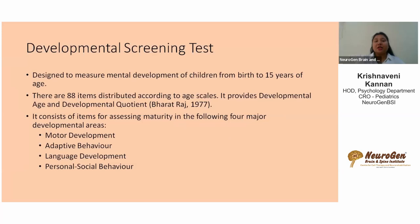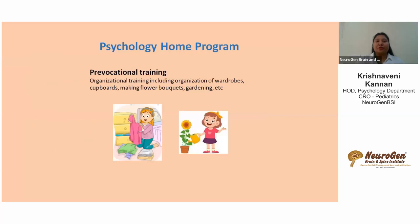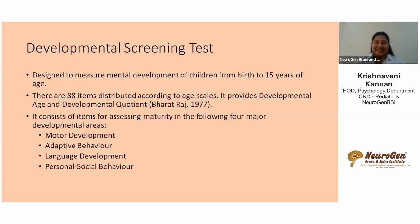The Developmental Screening Test (DST) is similar to VSMS and helps understand the child's Developmental Quotient (DQ) and developmental age. It covers major areas: motor development, adaptive behavior, language development, and personal-social behavior. Assessment and evaluation are the first steps when working with any client — without assessment, we don't know the challenge, where to start, or how intensive rehabilitation should be.